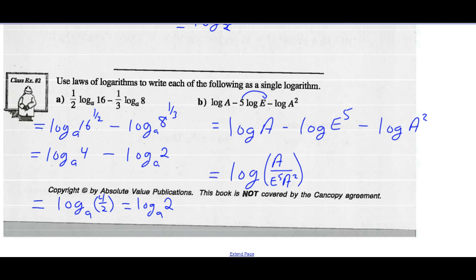And I can simplify the fraction in the brackets. A and A squared simplify. So I'm left with 1 over E to the fifth A. So the common log of 1 over E to the fifth A would be the simplest form.